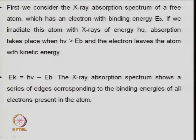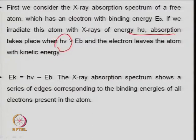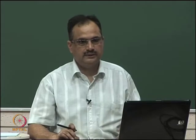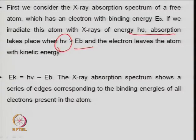When the X-ray absorption strikes a free atom with an electron of binding energy E_b: if hν is greater than E_b, the electron will come out from the surface. The energy hν must be sufficient to overcome the force of attraction between the nucleus and the electron — that is, hν should be larger than the binding energy. Then the electron will leave the surface.